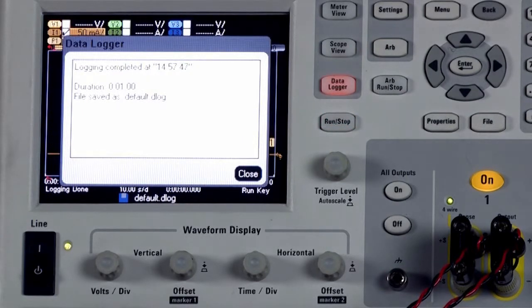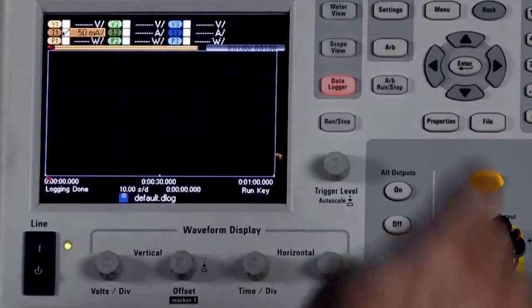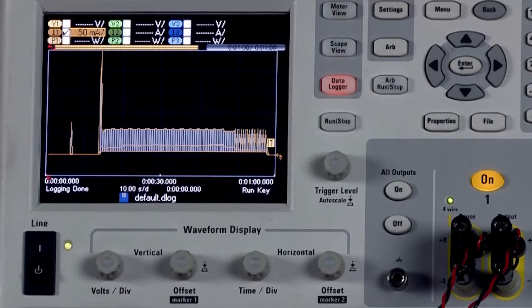So we're done with our data log and we have a display here showing that we've saved the file. We'll close that and now let's move on to step 5 where we analyze our data log record.